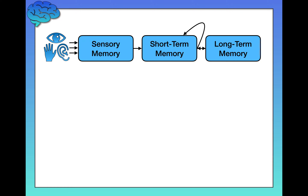There's a double arrow between short-term and long-term memory to reflect the idea that not only does information go from short-term to long-term memory, but you can also access memory from your long-term memory and bring it into your short-term memory to work with. For example, if I asked you to recall your favorite birthday of all time, you'd be accessing information from your long-term memory and bringing it back to your short-term memory.